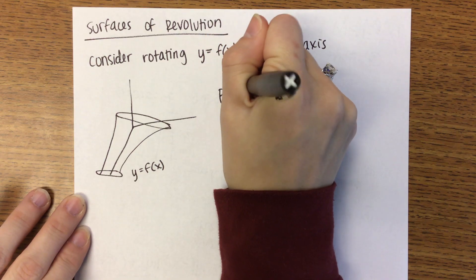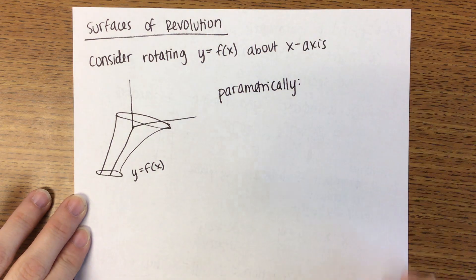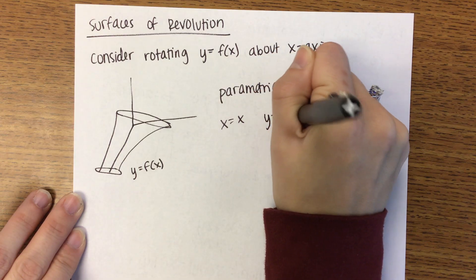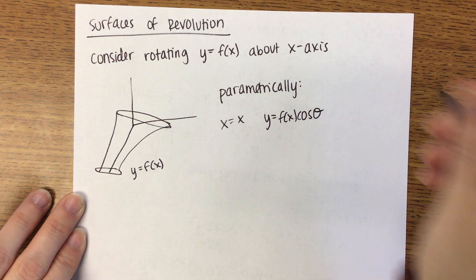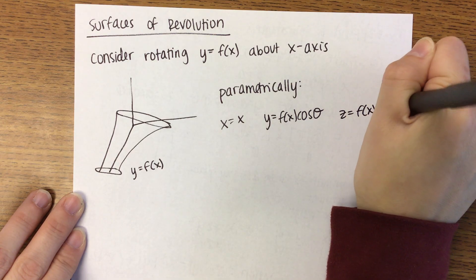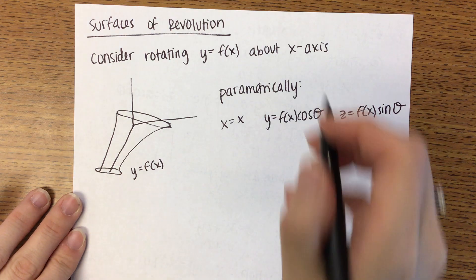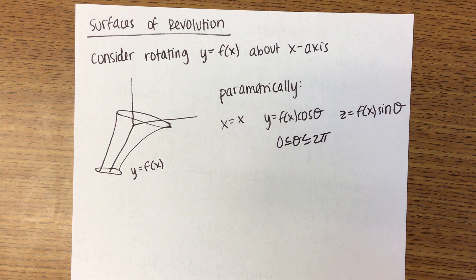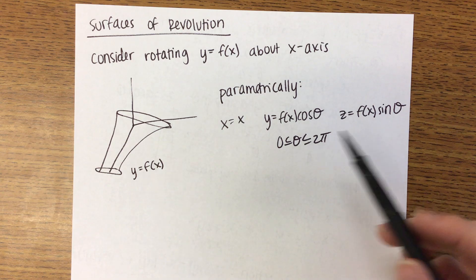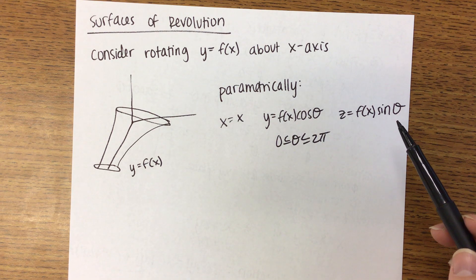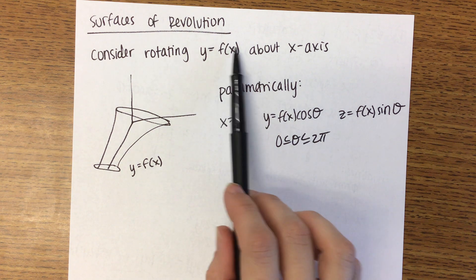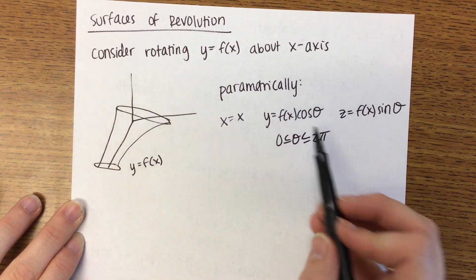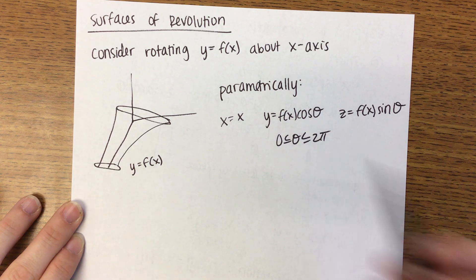Parametrically, here's how we would represent that surface. X is going to equal X. Y equals F of X times cosine theta. And Z equals F of X times sine theta. Theta is between zero and two pi. This should intuitively make sense. When you plug your X value in, that's going to give you the size of the circle. You should see if you cut through here, you're always going to get a circle. F of X tells you the radius of the circle, which will come from your surface.